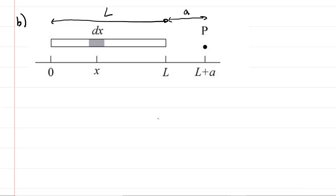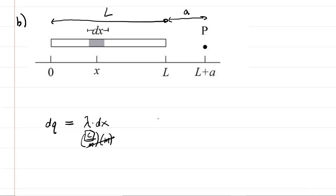We have highlighted a differential element along the rod. A differential element is basically a tiny length of the rod, and that tiny length contains some charge — we can consider it to be a point charge in essence. Because it's a tiny length, the amount of charge there would be dq. To figure out an expression for dq, we take the linear charge density, which is measured in coulombs per meter, and multiply it by the length of that differential element, which is dx in meters. When you multiply coulombs per meter times meters, the meters cancel, leaving you with coulombs — the exact unit of charge. So that's a little internal checkpoint.